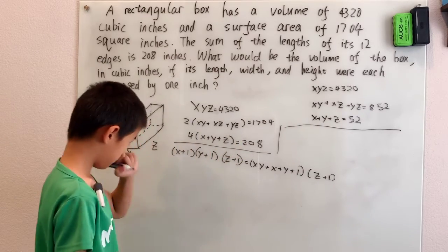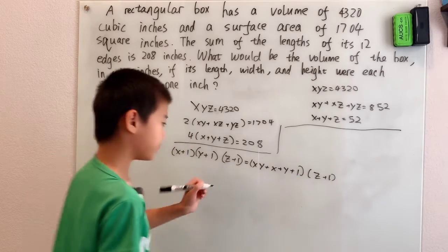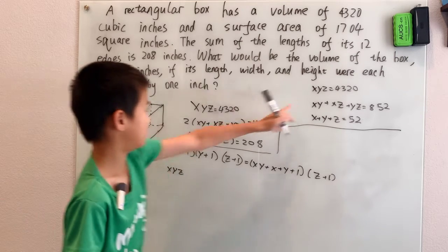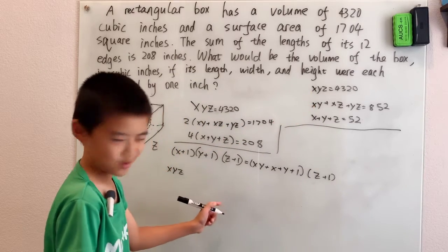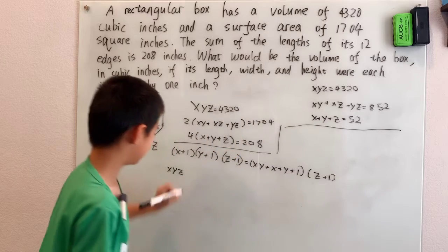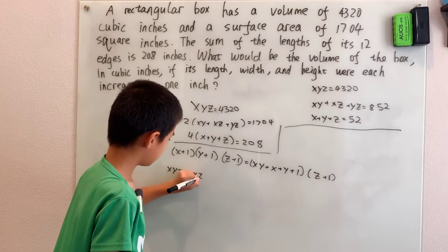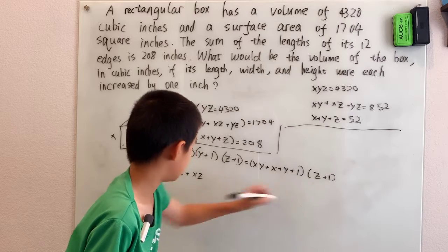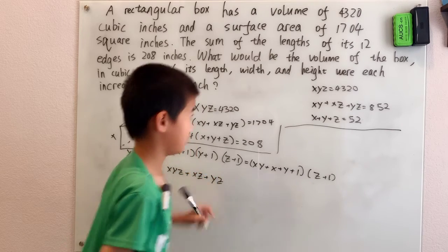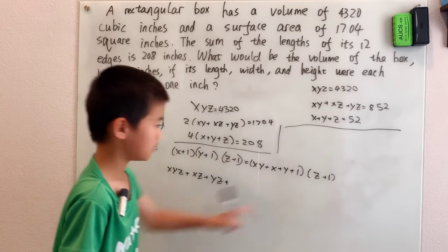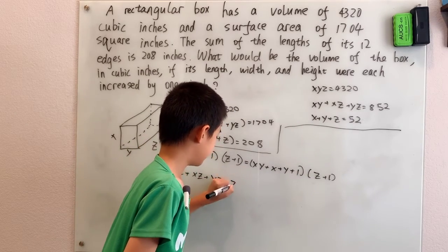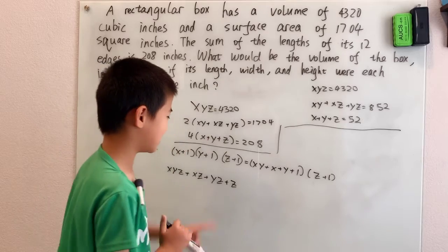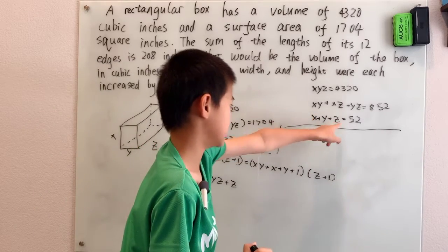xy times z is xyz. x times z is xz, y times z is yz. And sure enough, yz is up there. And one times z, it's not xy but xy is coming, and z is up there. x plus y plus z is 52.